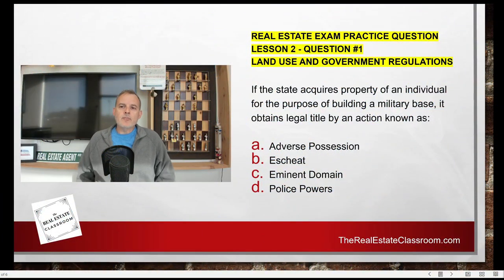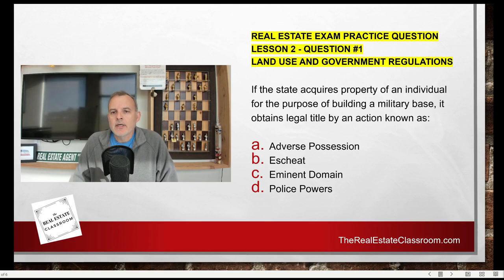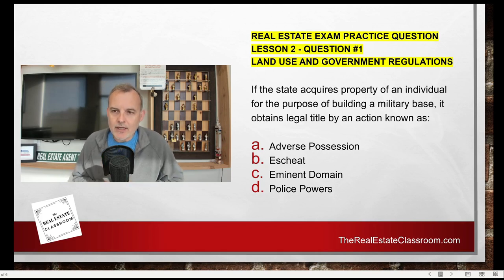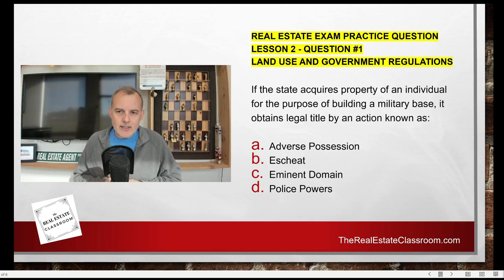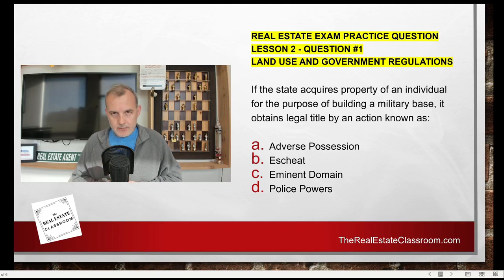Today's real estate practice exam question comes from playlist number two, or lesson number two in our study materials, and it's going to cover land use and government regulations. The question says: if the state acquires property of an individual for the purpose of building a military base, it obtains legal title — remember, title in real estate means ownership — by an action known as: A, adverse possession; B, escheat; C, eminent domain; or D, police powers.